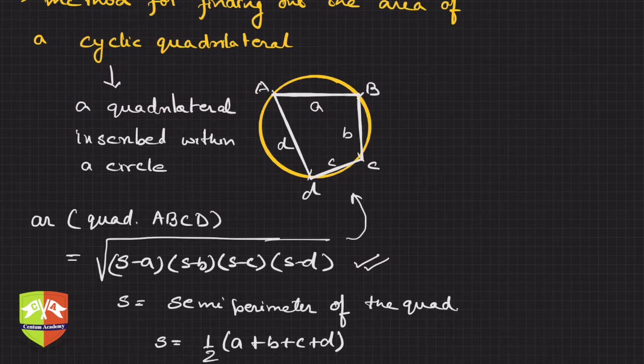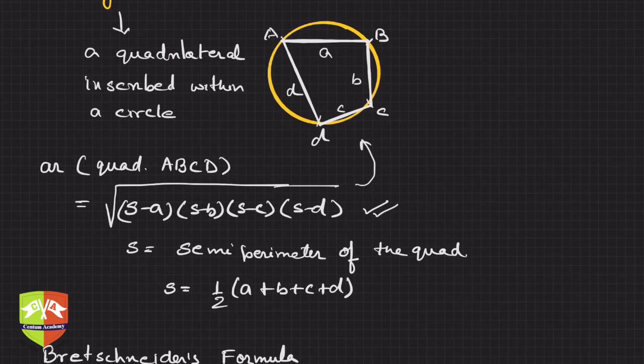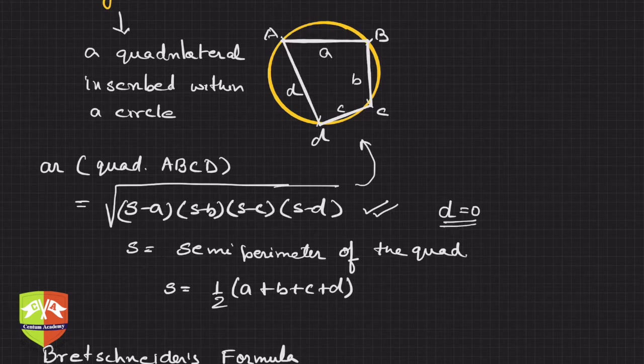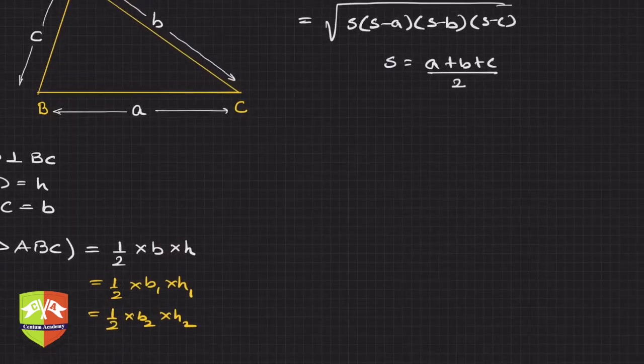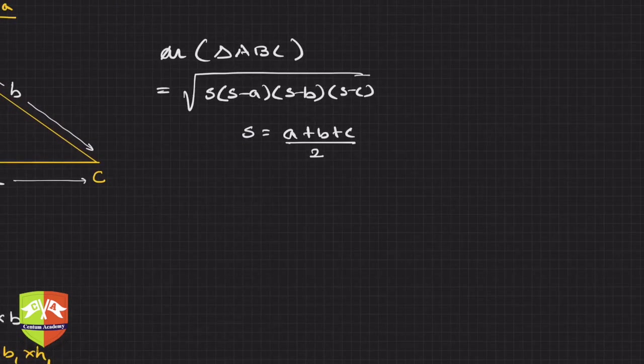You can ask how is this a special case of Brahmagupta's formula? If you see, in a triangle there is no fourth side, so in that case d will be 0. For a triangle, d equals 0. If you put d equals 0 in this formula, you will get this formula.